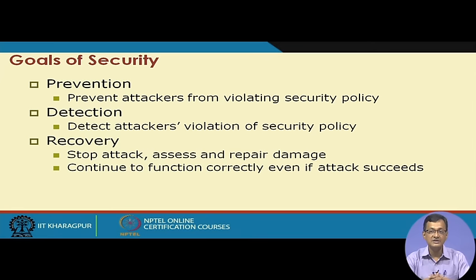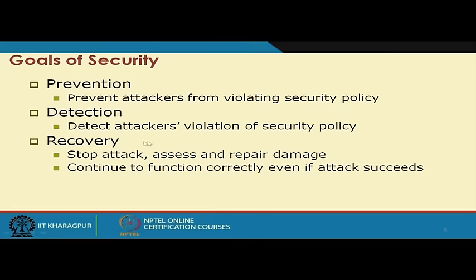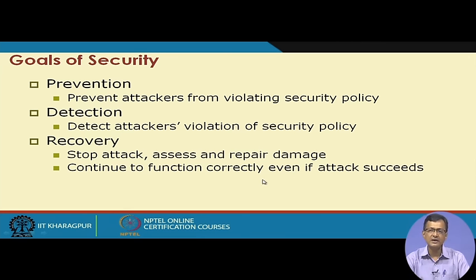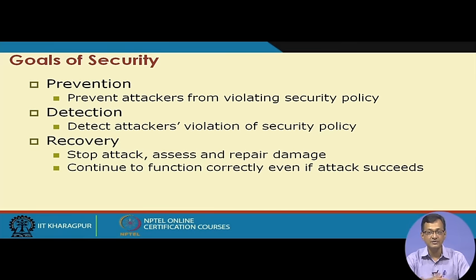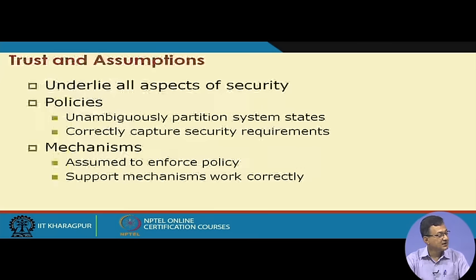Another security goal is recovery: if the system is compromised, how do we recover? Recovery mechanisms include stopping the attack, assessing and repairing damage, and continuing to function correctly even if the attack succeeds. In critical systems, best practices include redundant systems, logging mechanisms to aid recovery, and restoring systems to a pre-attack state. All of this comes with a cost.